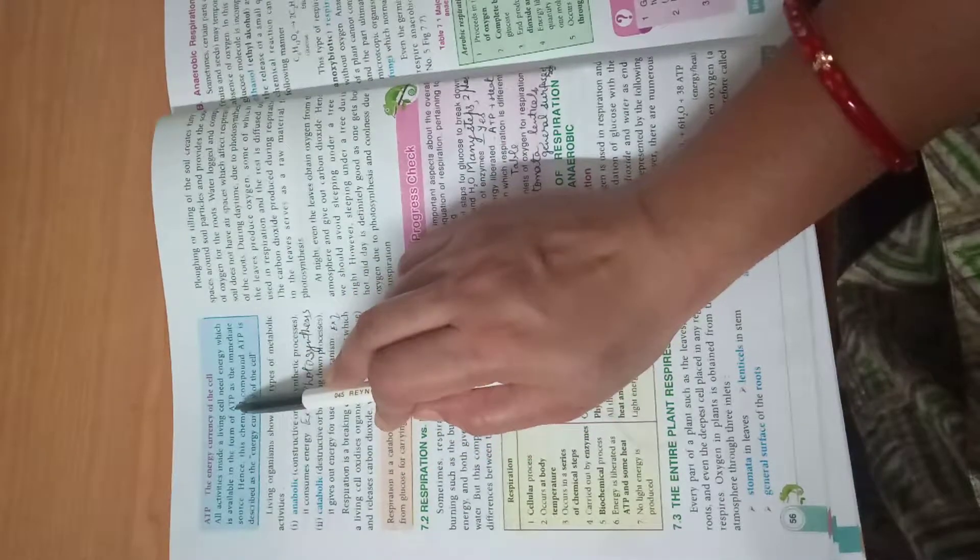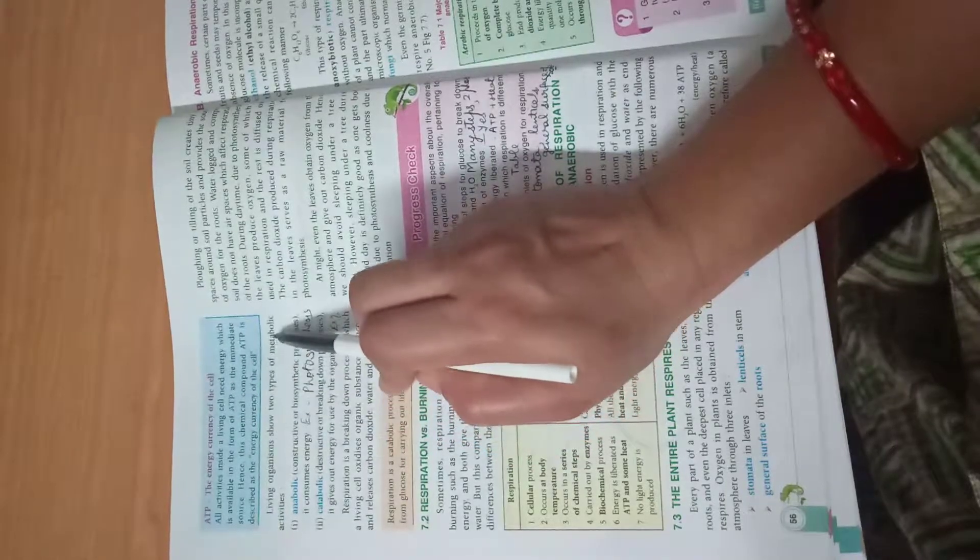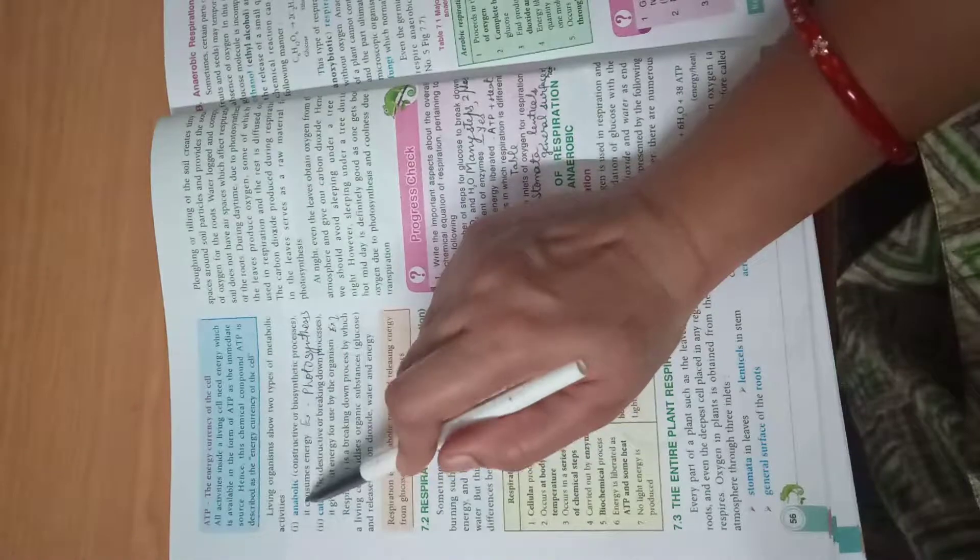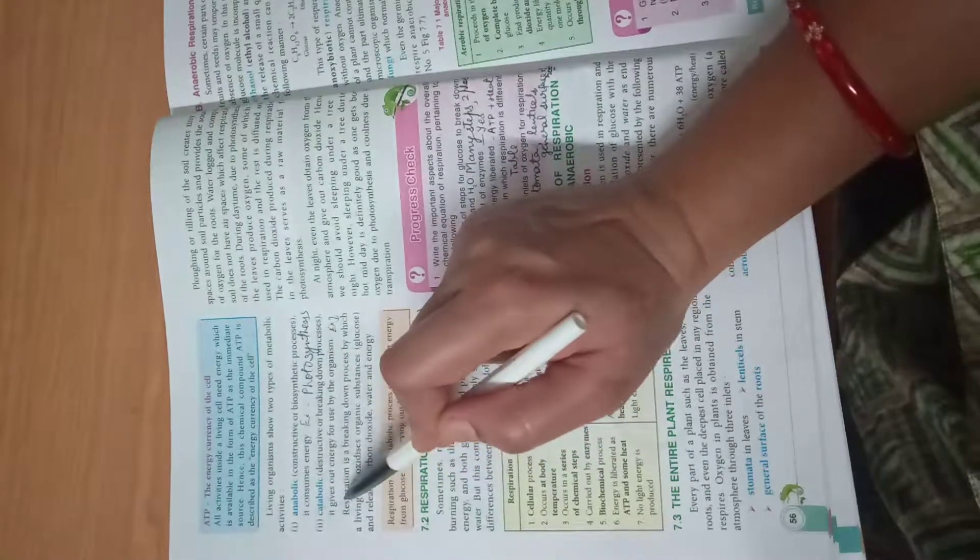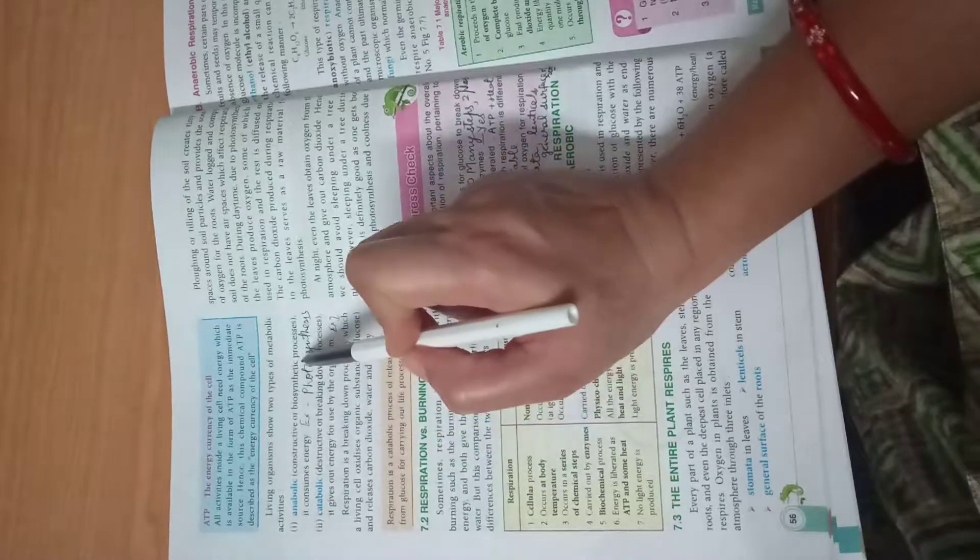Its full form is adenosine triphosphate. Living organisms show two types of metabolic activities: anabolic and catabolic. Sometimes the difference between the two is also asked. Anabolic are constructive or biosynthetic processes.